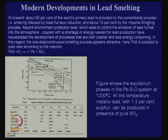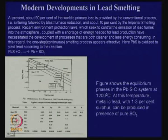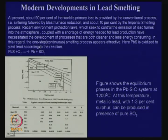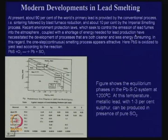The imperial smelting process is applied for simultaneous production of zinc and lead from concentrates which contain both zinc sulphide and lead sulphide — such concentrates are very common. We have the imperial smelting process operating in Rajasthan. Recent environmental protection laws seeking to control emission of lead fumes, coupled with shortage of energy and dependence on coke, have necessitated development of processes that are both cleaner and less energy consuming.